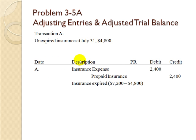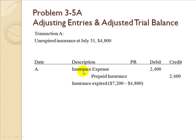In Transaction A, it states unexpired insurance at July 31st is $4,800. Looking at the unadjusted trial balance on page 141, the prepaid insurance account has a debit balance of $7,200. We deduct the ending balance of $4,800 from $7,200 and determine that insurance expired for the period is $2,400. We debit insurance expense $2,400 and credit prepaid insurance $2,400, increasing the expense account and decreasing the asset.